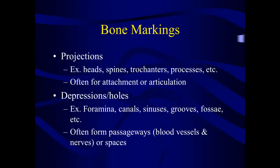The last thing to discuss are the markings on bones, which will become very important during the bone labs. Bones are protective and serve as attachment points. There are various types of projections — referred to as processes, heads, spines, trochanters, and similar terms — which are there for attachment or articulation. There are also holes or depressions such as foramina, canals, sinuses, and grooves, which often form passageways for blood vessels, nerves, or other structures.